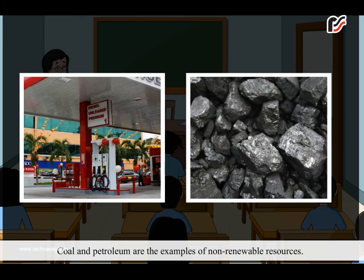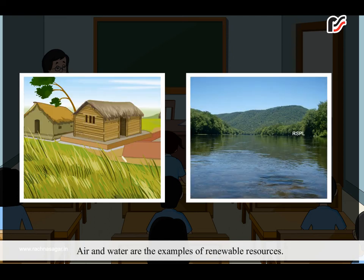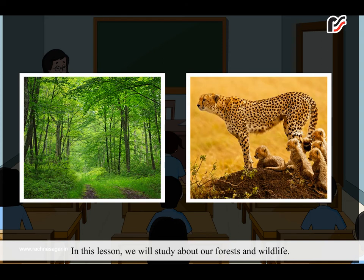Coal and petroleum are examples of non-renewable resources. Air and water are examples of renewable resources. In this lesson, we will study about our forests and wildlife.